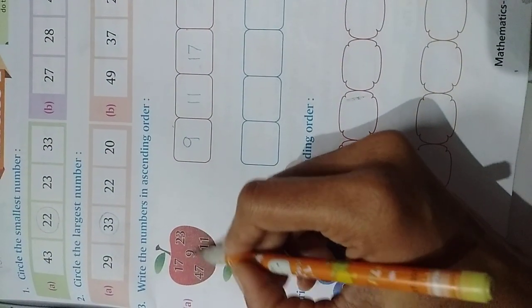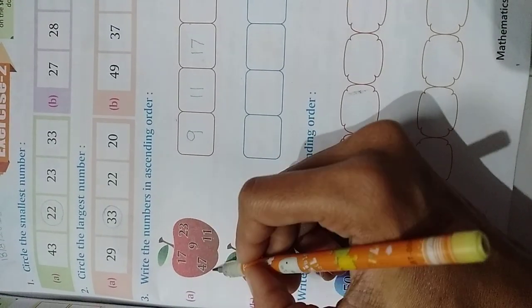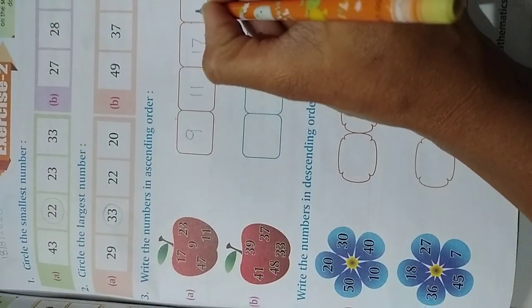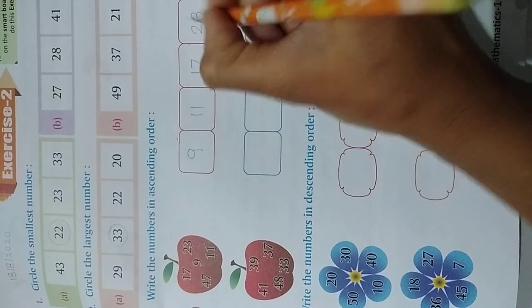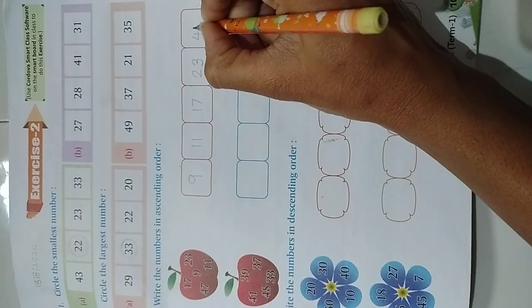Now there are two numbers remaining. 23 and 47. Which one is smaller here? 23. Right here 23. And the last number is 47. It is the biggest number.